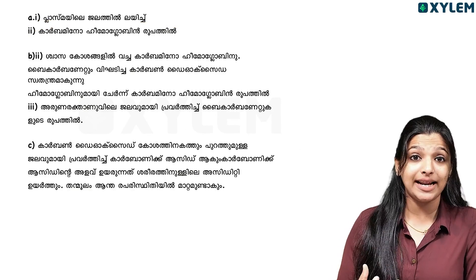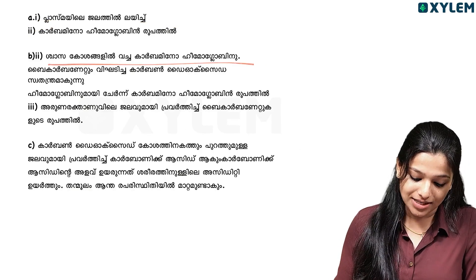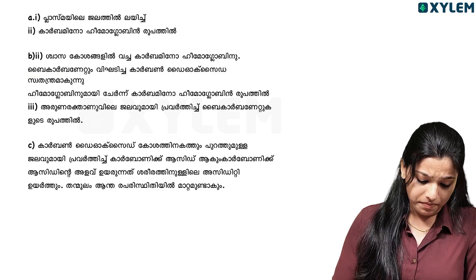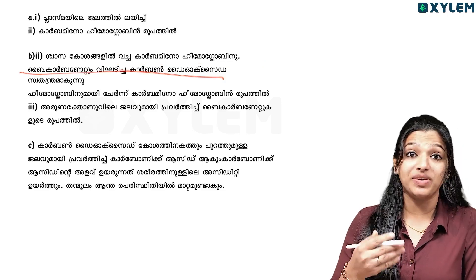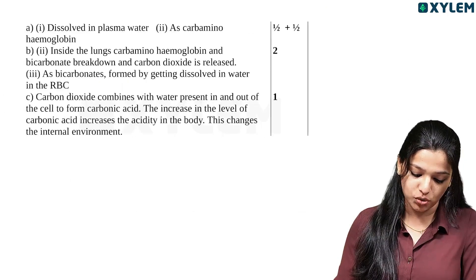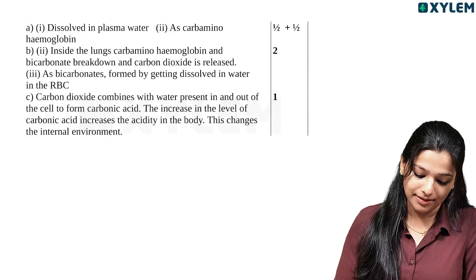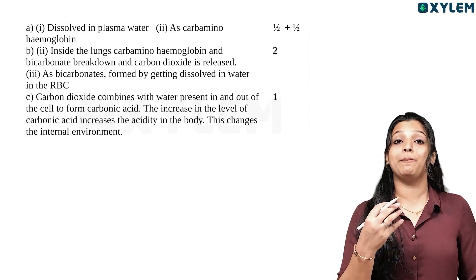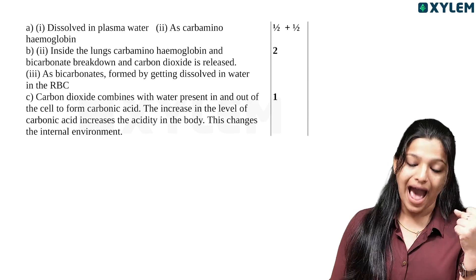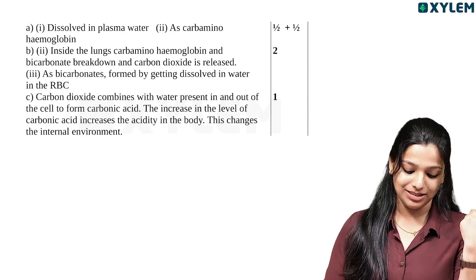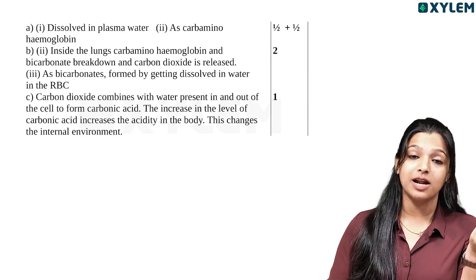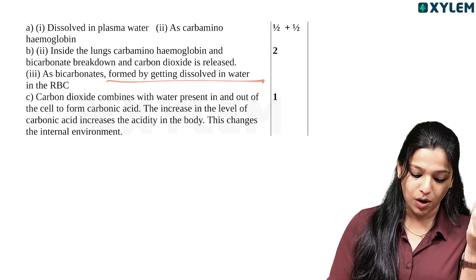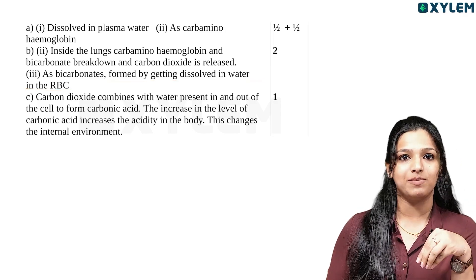Looking at form 2, it is carbaminohemoglobin — carbon dioxide binds with hemoglobin to form carbaminohemoglobin, and then carbon dioxide is released. Form 3 is carbonate, which is found by carbon dioxide dissolving in water in the RBC.